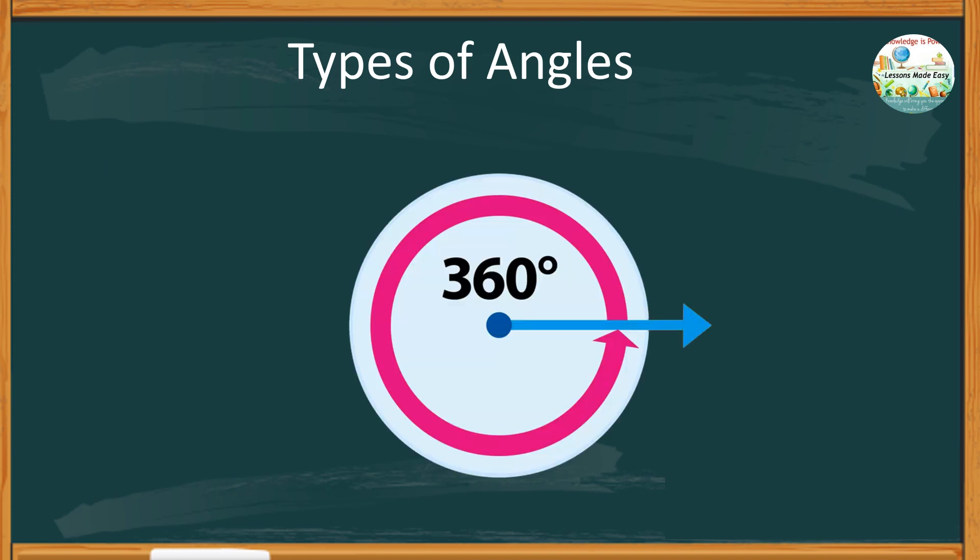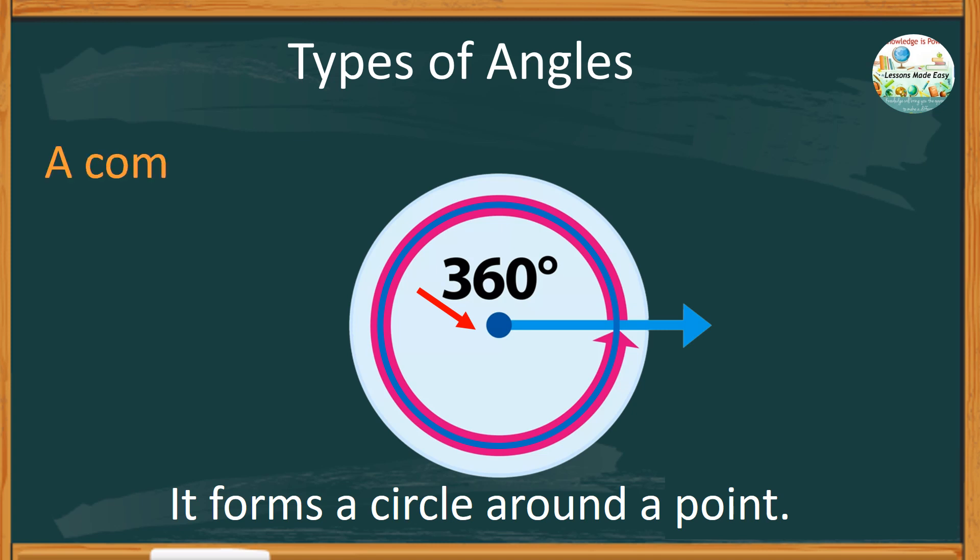Here is the last one. What do you think about this type of angle? If you notice, it forms a circle around a point. This type of angle is known as a complete angle. You can also call this a full angle.